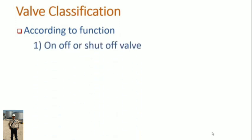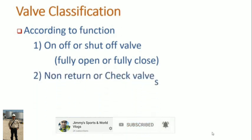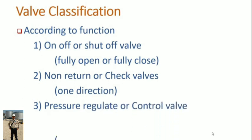First, here we have on-off or shut-off valves. They allow flow by fully opening or stop by fully closing the valve. Then non-return valves or check valves, which allow flow in only one direction. And finally, pressure regulate or control valve, which are used to control the flow.